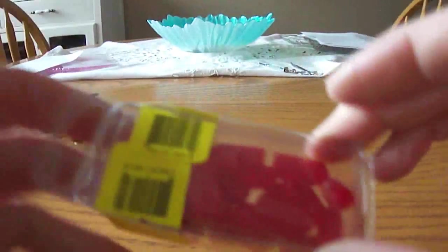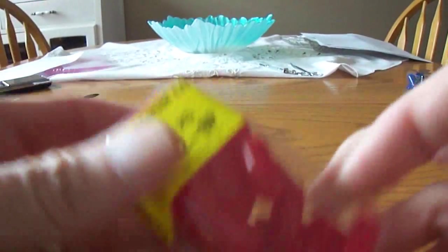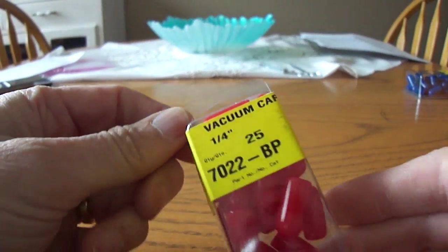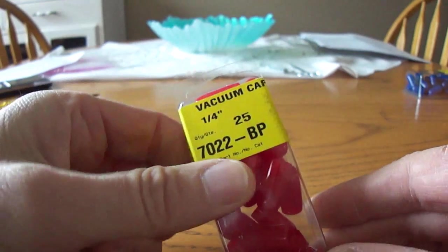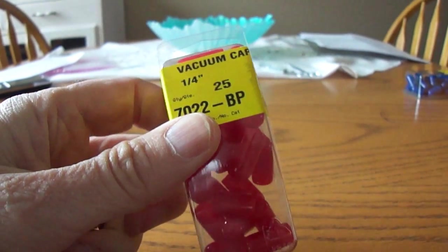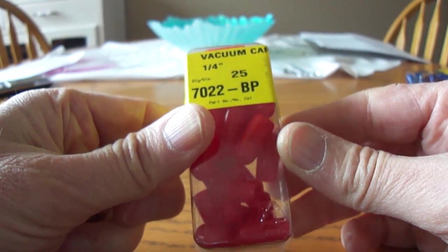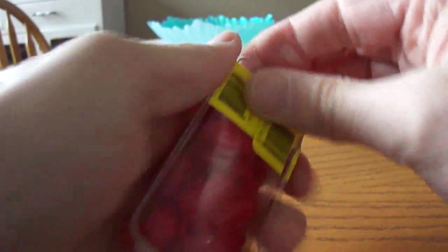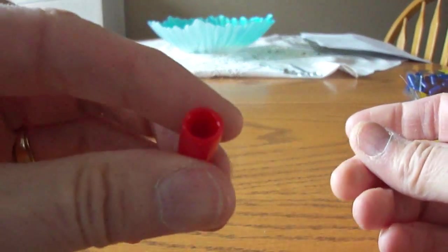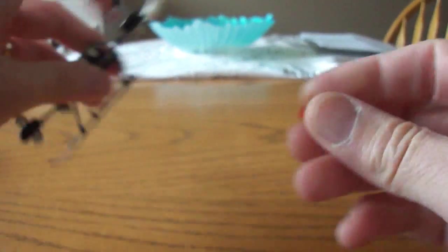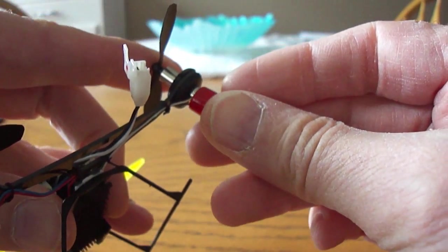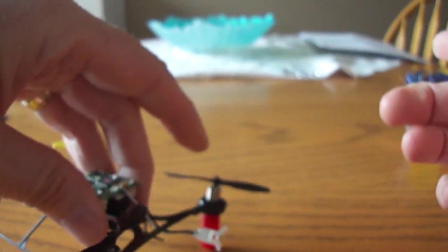I managed to find some... these are actually called vacuum caps, but they're also what they've used as thread protectors for protruding threads. These ones are a quarter inch and they fit on the motors nicely.